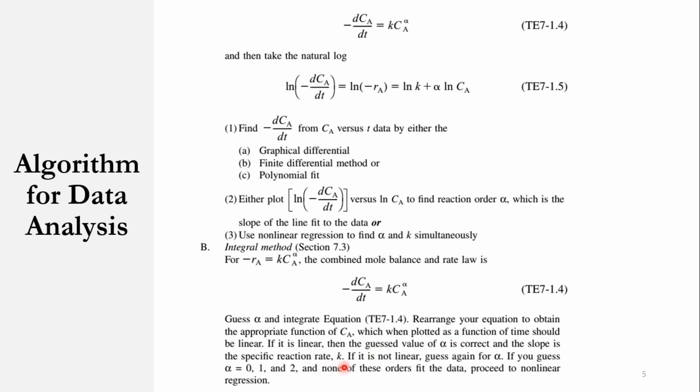And the value of slope is the specific reaction rate constant, which is k. If it is not linear, guess again. But how many times you can guess it? It is applicable for only three orders of reactions: zero order, first order, and second order. If it is not coming in it, you cannot use this method, and you have to proceed to the nonlinear regression if differential method is also not suitable.